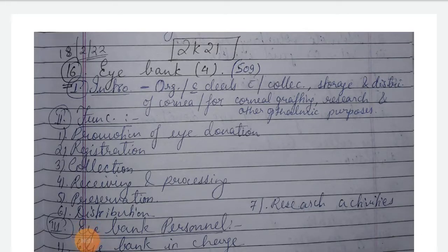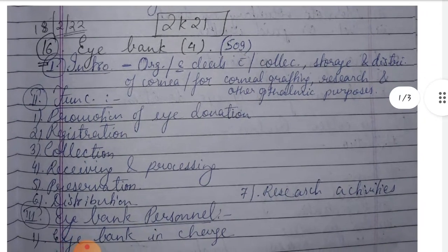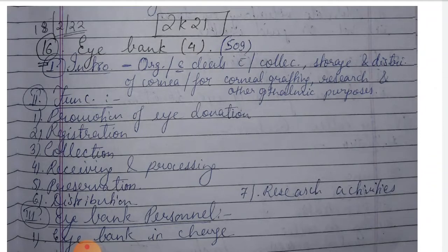Let's discuss the university question paper of 2021 in ophthalmology. One of the new questions is about the eye bank. An eye bank is an organization that deals with collection, storage, and distribution of cornea for corneal grafting, research, and other ophthalmic purposes.